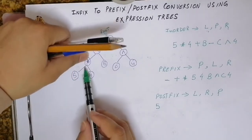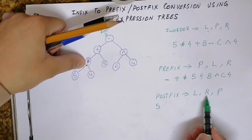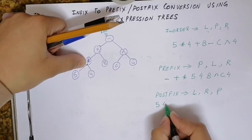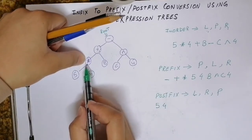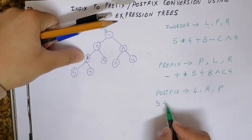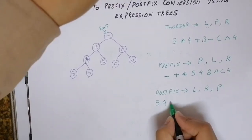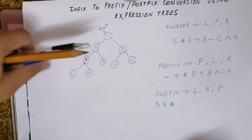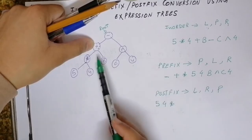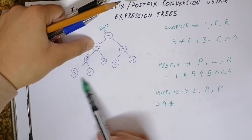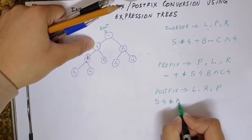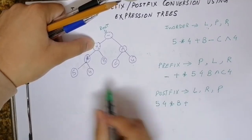The first thing that gets printed is 5, since left-left is null and right is null. The tree returns to multiply. Multiply calls its right subtree, which calls its left and right subtrees — both null — so it prints itself and returns back to the calling function. Then multiply is printed. Multiply returns to plus. Plus's left subtree has been visited, so it moves to its right subtree B and prints B. Then plus is printed.